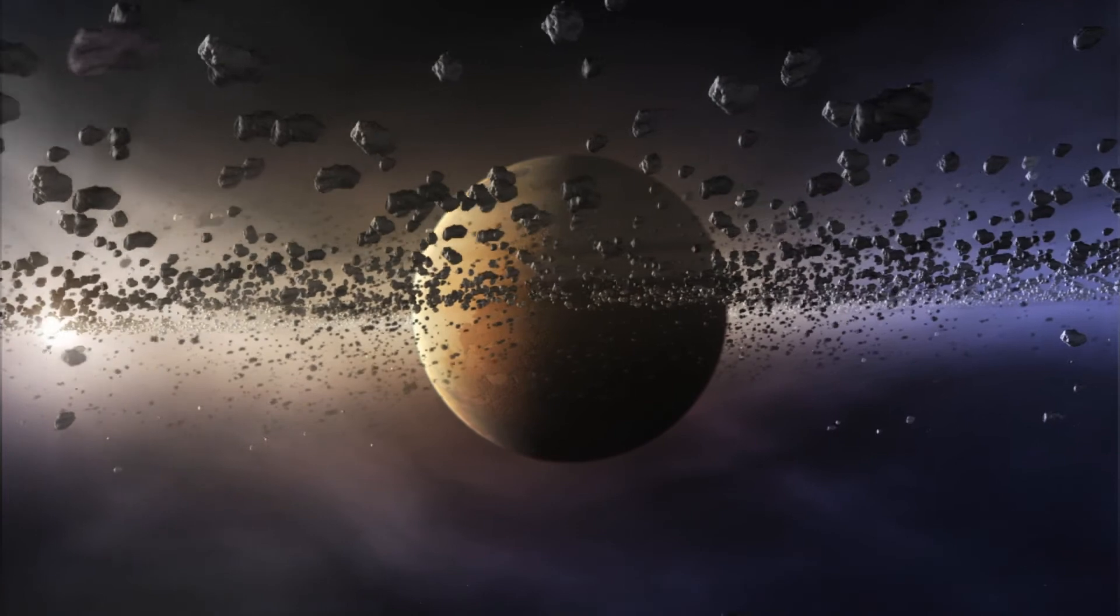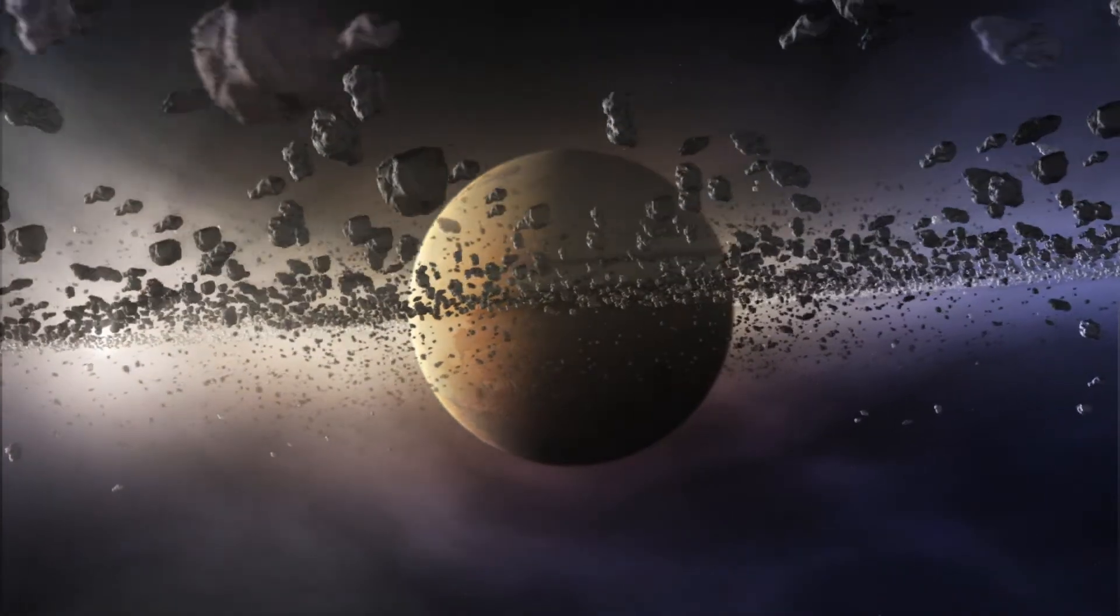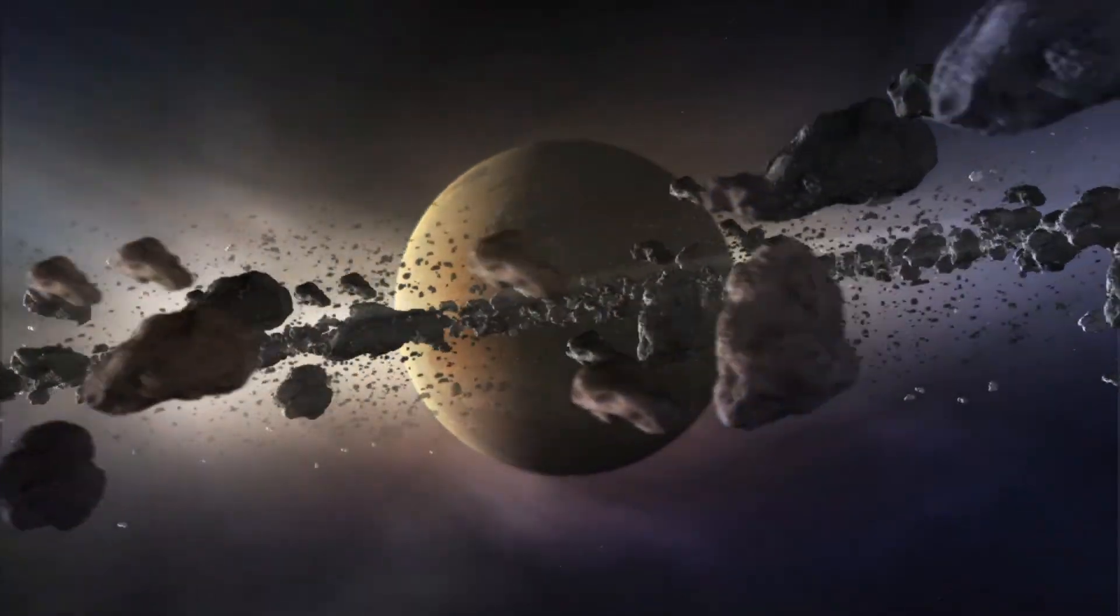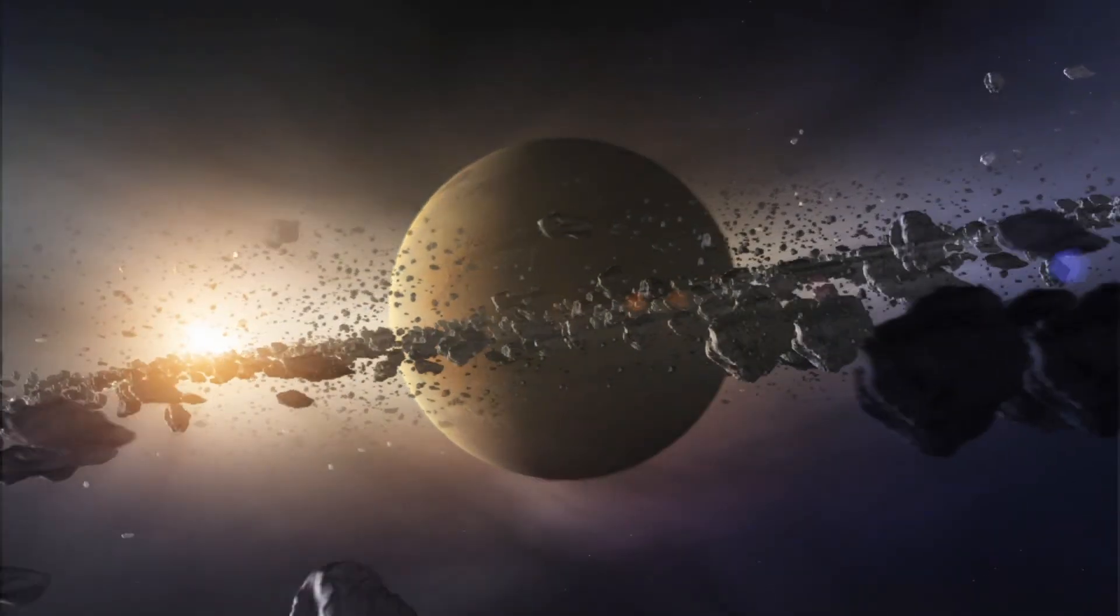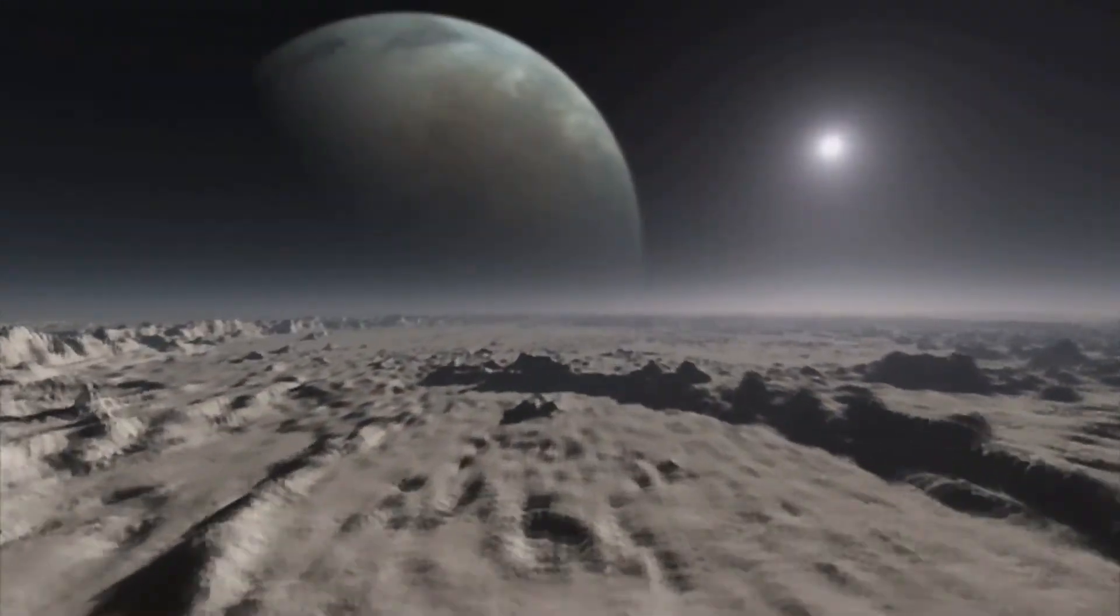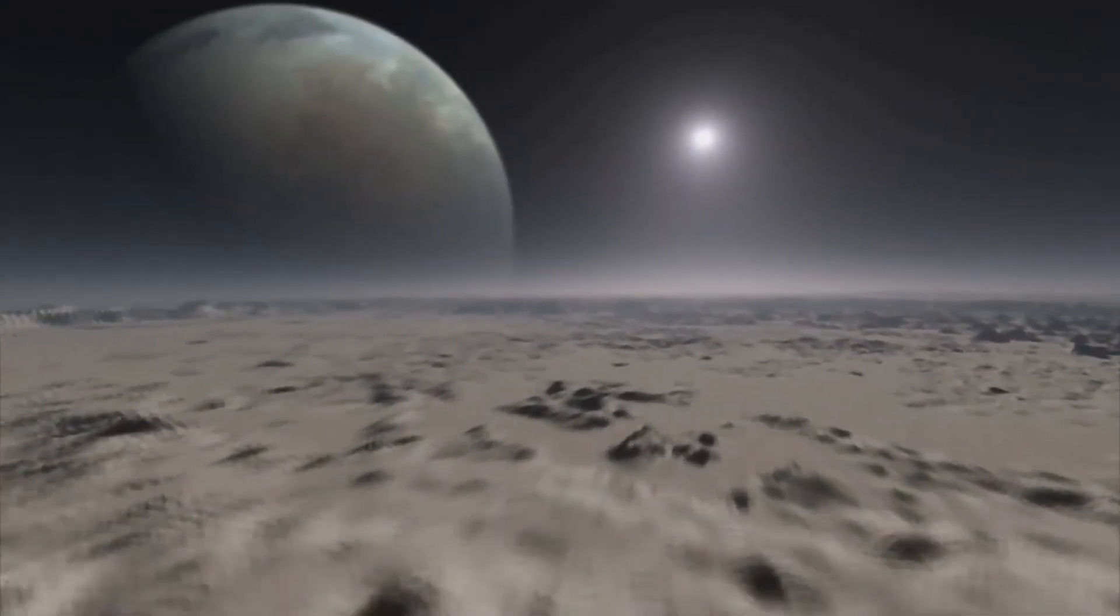The observations show that Fomalhaut B is much brighter than expected for an object of its size. It could have an enormous ring system much larger than Saturn's, reflecting starlight in all directions. One day the material in these rings may even coalesce to form moons.